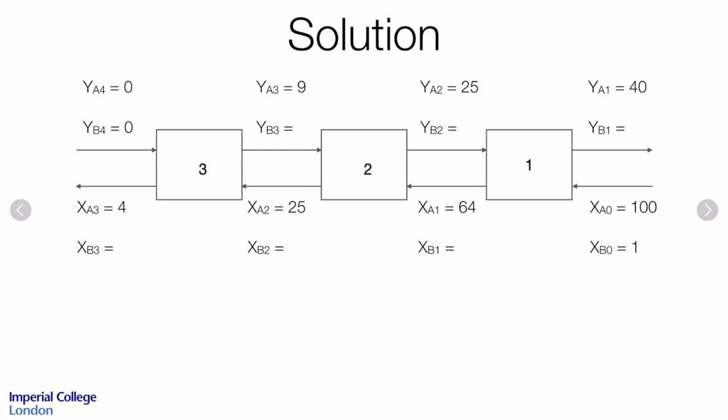This shows, for example, that the concentration of A leaving stage 1 is 64 in the aqueous phase and 40 in the solvent phase, and likewise for the equilibrium streams leaving stages 2 and 3. So we now know all of the intermediate compositions for A, but we don't know anything about B.